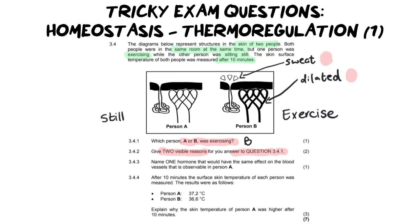So if we look at the next question it says name one hormone that would have the same effect on the blood vessels that is observable in person A. So first of all we need to discuss what's happening in person A. Now person A over here their blood vessels are constricted, now remember that means they're smaller.